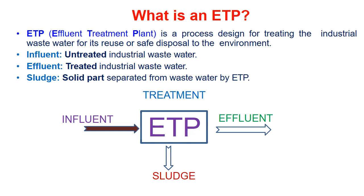The untreated industrial water is called influent, and after treatment the water going out is considered effluent. In the process of treatment, the solid part separated from the wastewater is called sludge. So these are the three key terms to understand: influent, effluent, and sludge.